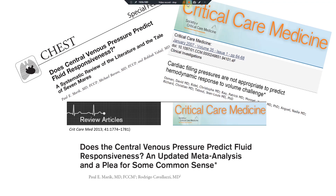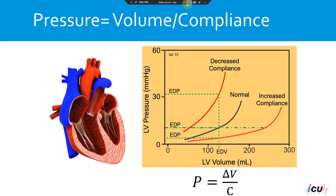This is simply related to the fact that when we are using pressure, we're using it as a surrogate for the volume status. However, there's a third component that needs to be taken into consideration, which is the compliance of the ventricle. The pressure is the change in volume divided by the compliance.